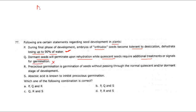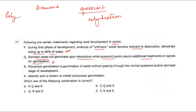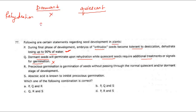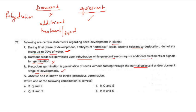This statement is wrong. Quiescent seeds can germinate upon rehydration, but dormant seeds cannot - they require an additional treatment or signal for germination. Precocious germination is the germination of seeds without passing through the normal quiescent and dormant stages - it is a premature germination. This is correct. Abscisic acid is known to inhibit precocious germination - this is also correct.